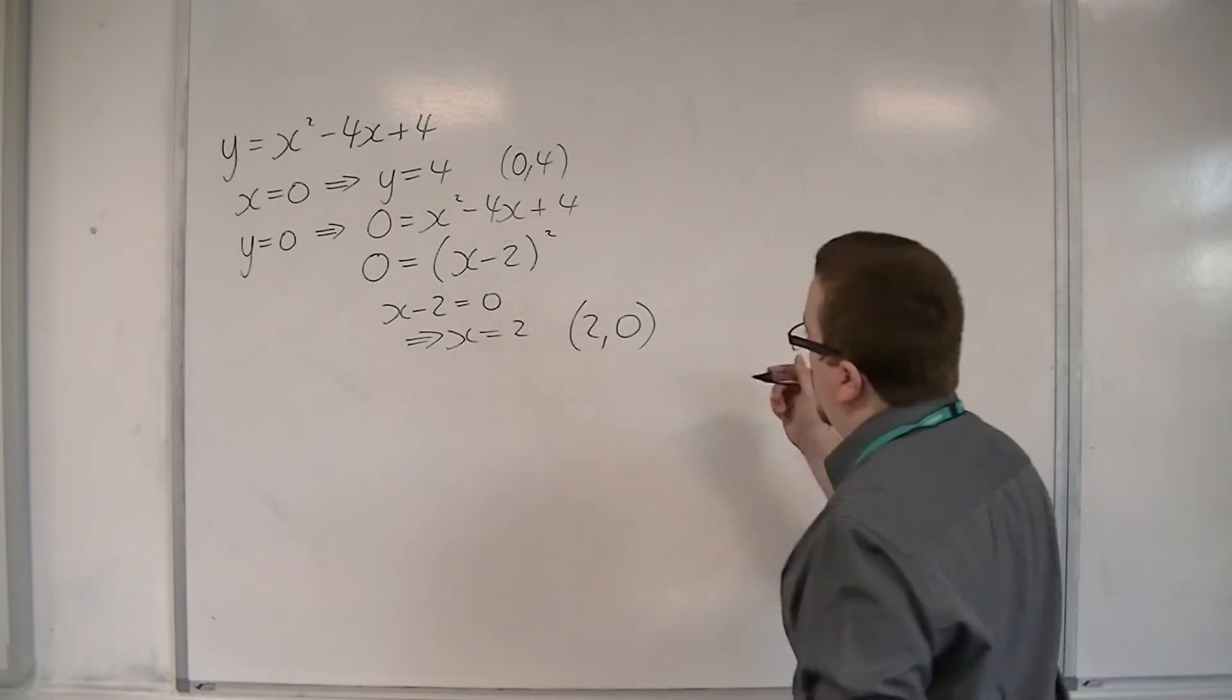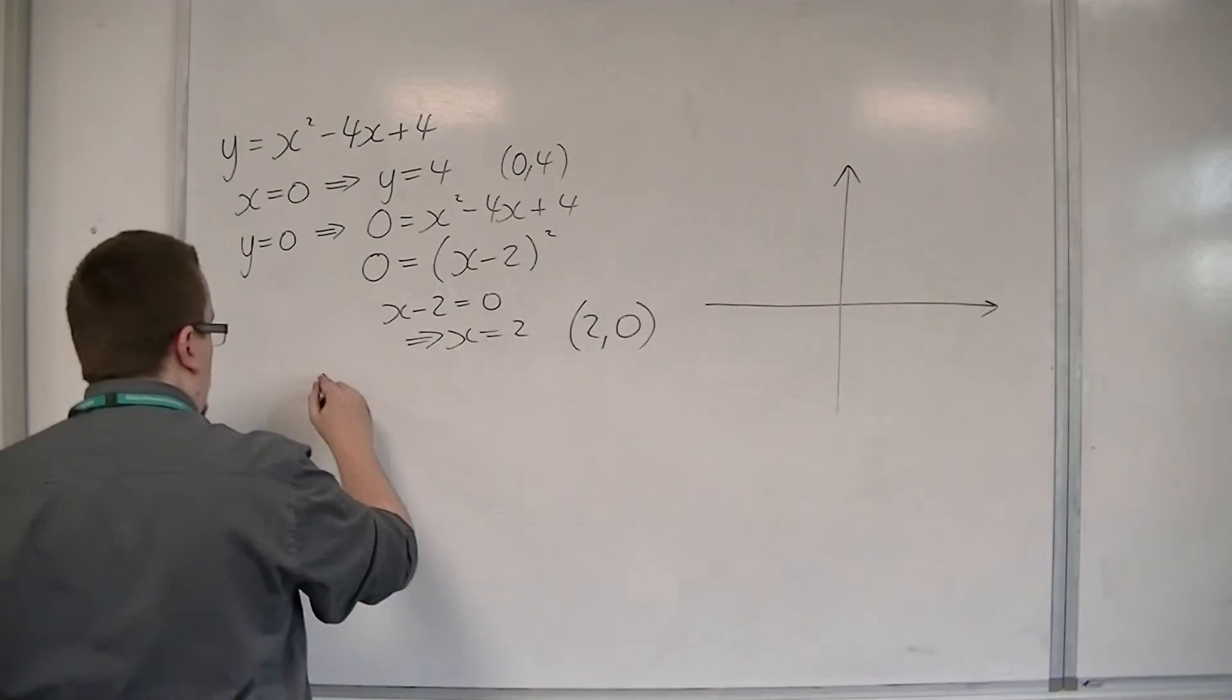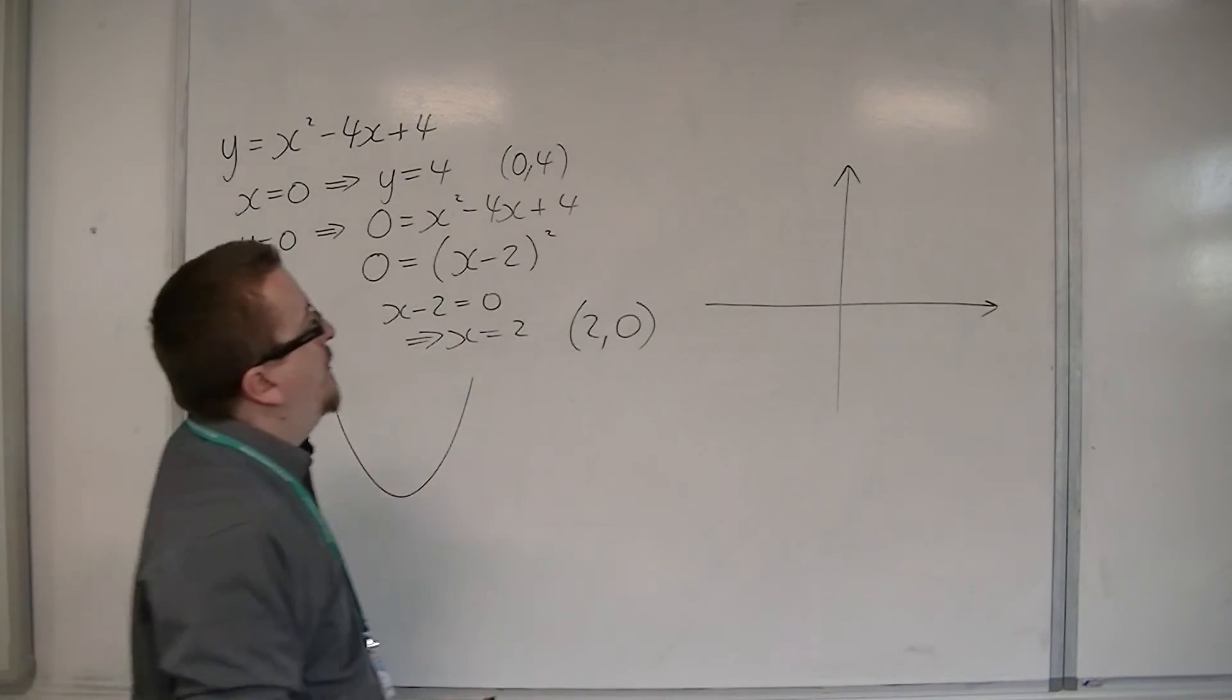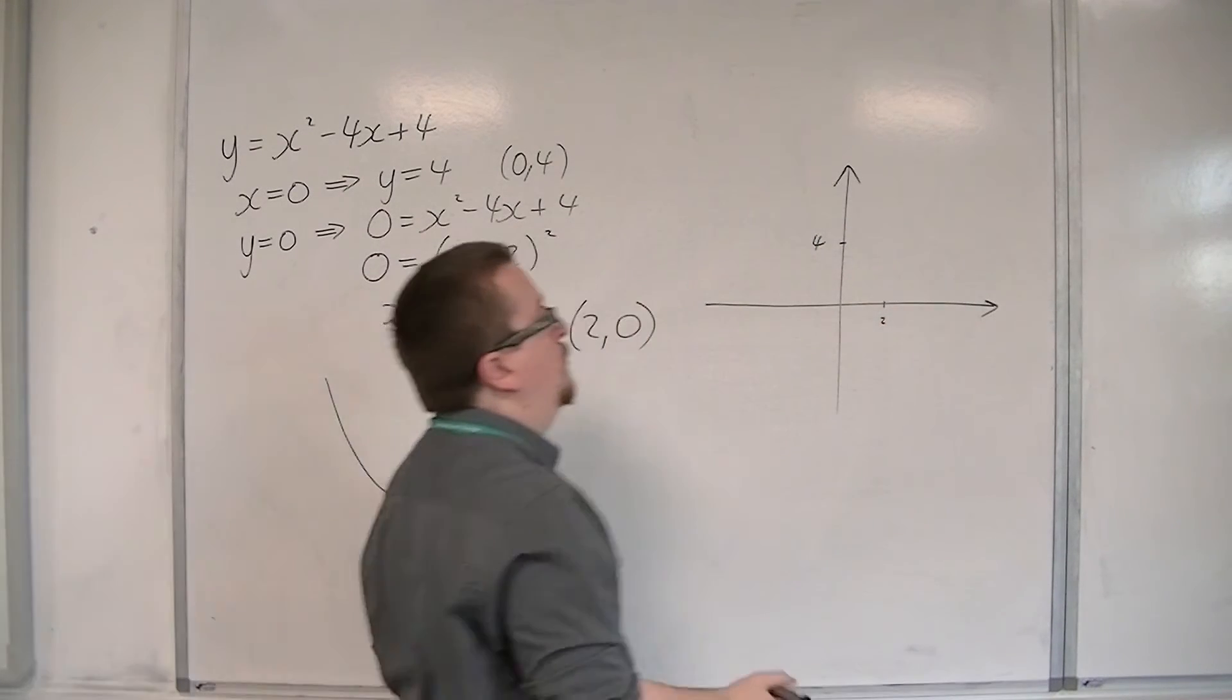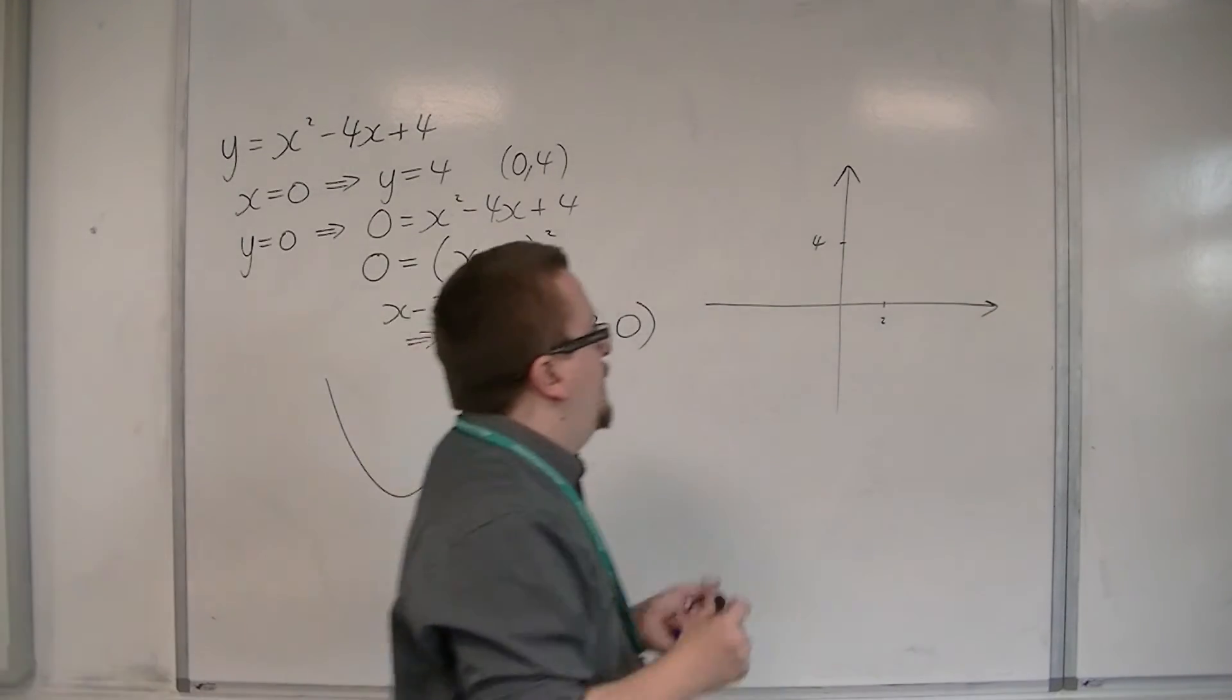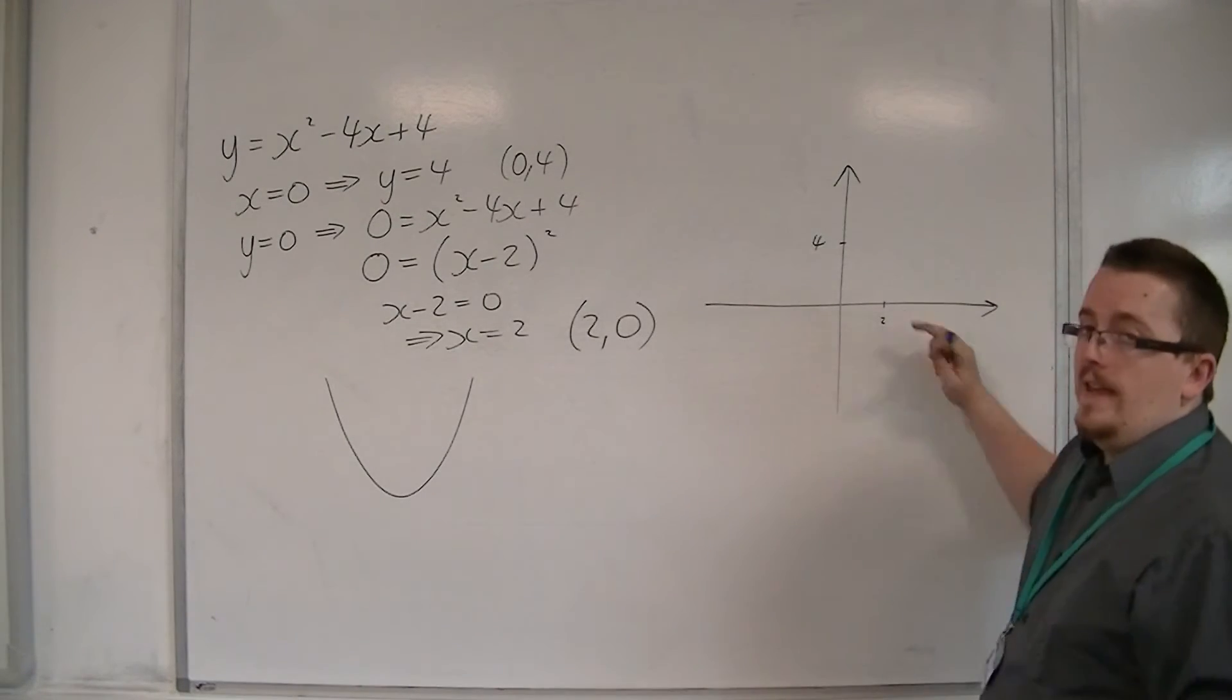Now, this is peculiar, because if you think about the shape of the curve looking something like that, and we know that it's crossing through the y-axis at 4 and crossing through the x-axis at 2, what that would mean is that in order for it to do that, it must only brush the x-axis.